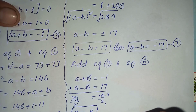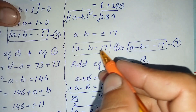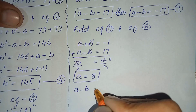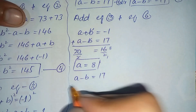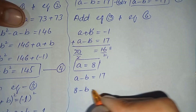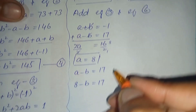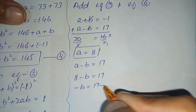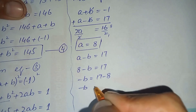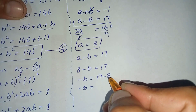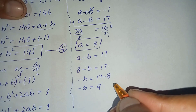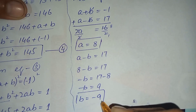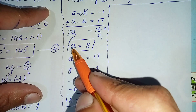To find b, we substitute a equals 8 into equation number six: 8 minus b equals 17. Shifting 8 to the right-hand side gives minus b equals 17 minus 8, which is 9. Multiplying both sides by minus 1, b equals minus 9.